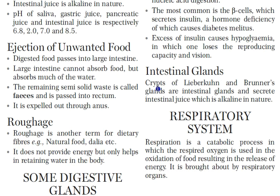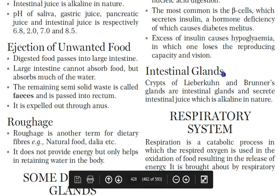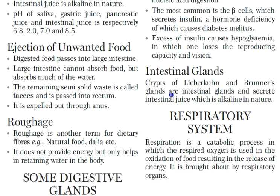Intestinal glands — the crypts of Lieberkühn and Brunner's glands — are present in the intestine and secrete intestinal juice, which is alkaline in nature. These glands aid in digestion. We will continue with the respiratory system in the next session.